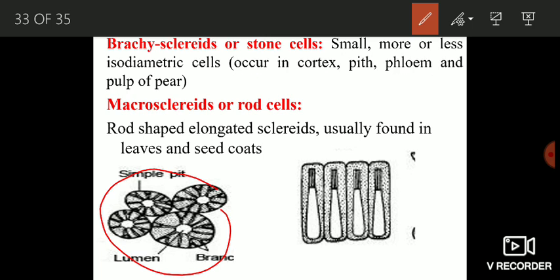And the second type is macrosclereids or rod cells. These cells are rod shaped elongated sclereids and they are usually found in leaves and seed coats of plants. These are the macrosclereids or you can see rod shaped sclereids.